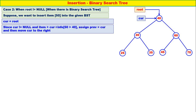Since kerr is not equal to null and item is greater than kerr of info — kerr of info is 40, item is 50, and 50 is greater than 40 — therefore assign priv equal to kerr, and then move kerr to the right. Before moving to the right, priv is equal to kerr, then you move to the right.